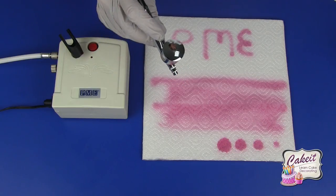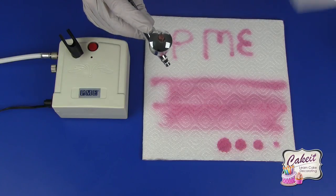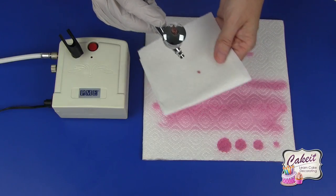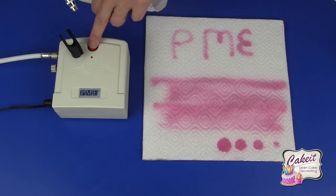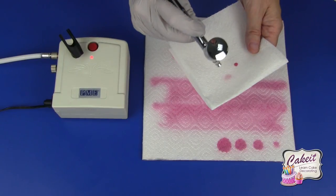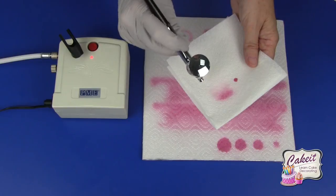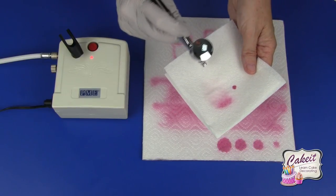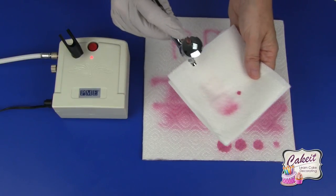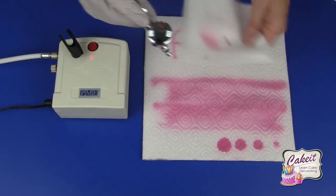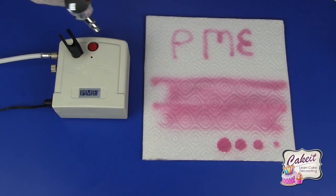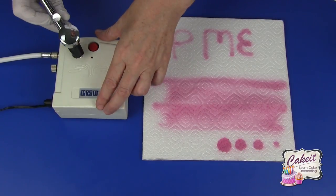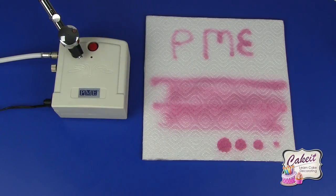And now into some paper towel switch the airbrush on until you get clear liquid coming through. You can see that's clear now, so this means that it's clean. And just replace that back into the holder. And that's how to use the PME airbrush and compressor.